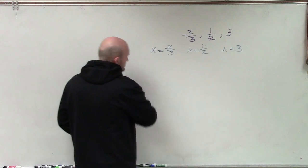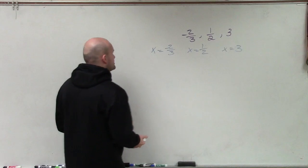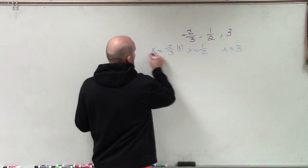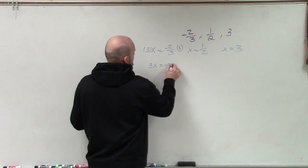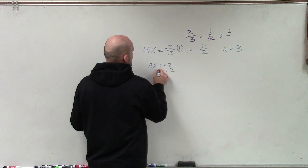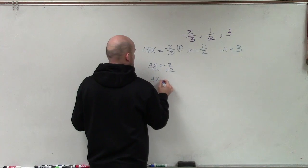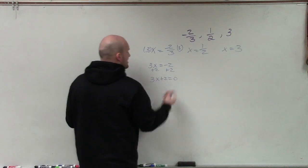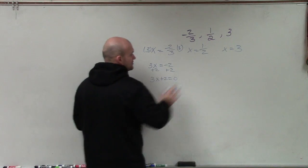And the way that I'm going to do this is by using my inverse operations. If I multiply by 3 on both sides, therefore I get 3x equals negative 2. Then I can add 2 to both sides and I'll have 3x plus 2 equals 0. Now that's going to be a factor I'm going to use.